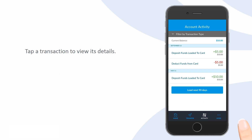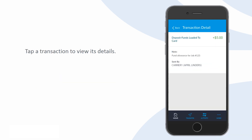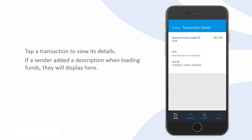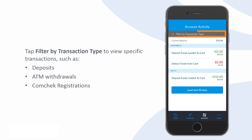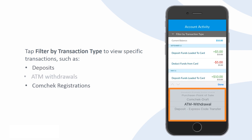Tap a transaction to view additional details. For example, if a sender added a description when loading money onto your card, it will display on the Transaction Details screen. Tap Filter by Transaction Type to narrow the history down to specific transactions, such as deposits, ATM withdrawals, or ComCheck registrations.